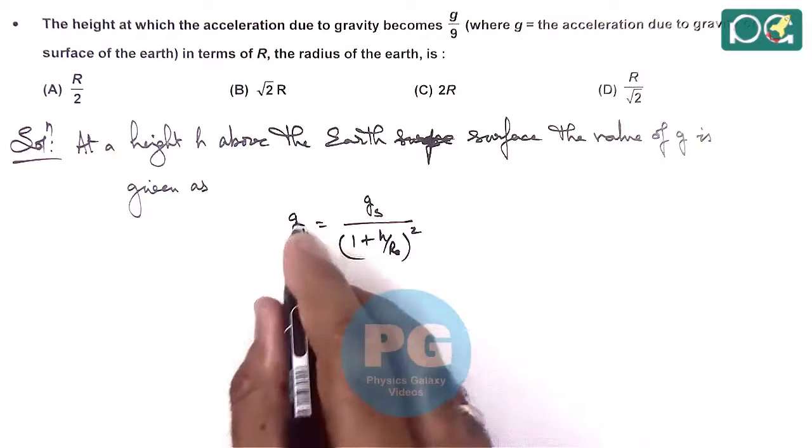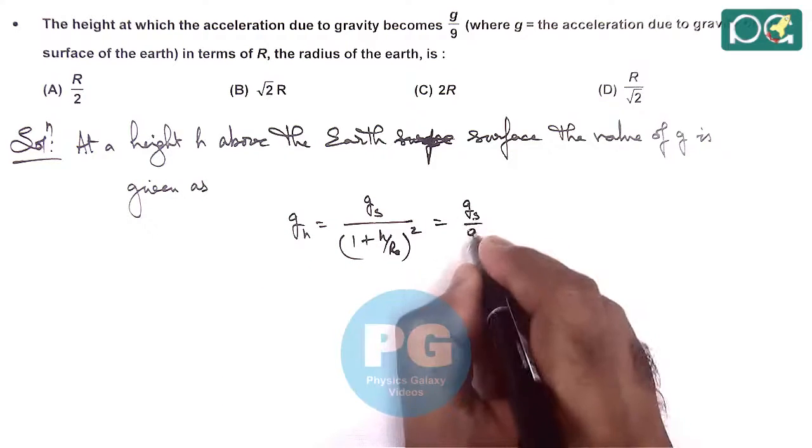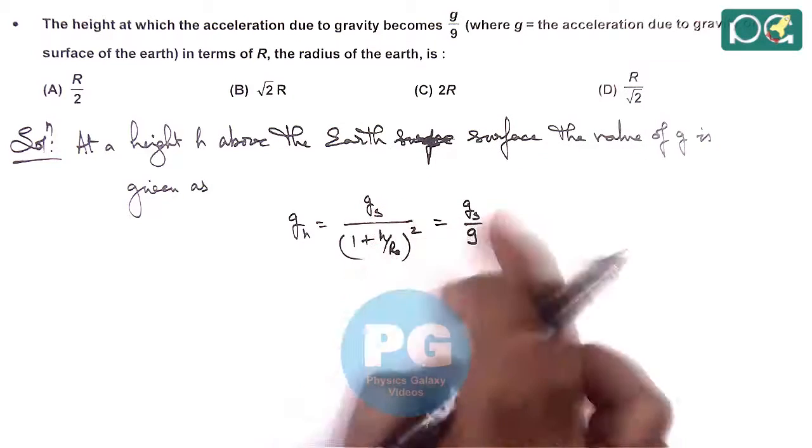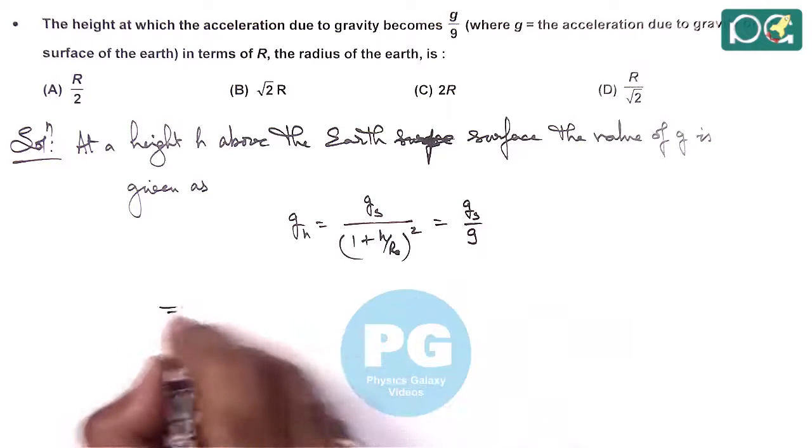Here we are given that at a height h above, this is g_s by 9. Because if g is the acceleration on surface, we need to find h so that the value of g is 1 by 9 times g.